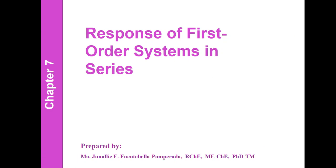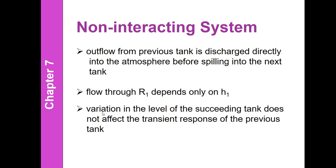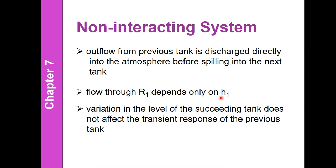We will start with the liquid level system that is non-interacting. The second type is the interacting system, the opposite of this one. When we speak of a non-interacting liquid level system, the outflow from the previous tank is discharged directly into the atmosphere before being introduced into the next tank. The flow from the first tank passes through linear resistance R1, which is dependent on the level of the liquid in that tank.